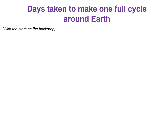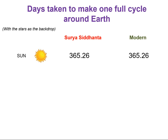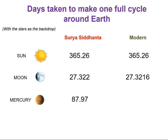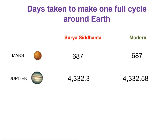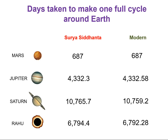From figures listed in the Surya Siddhanta, we can draw the following comparison of days taken for each planet to make one full cycle around the Earth. The sun: 365.26 days in the Surya Siddhanta — the modern figure is exactly the same. The moon: 27.332 days — very similar to modern. Mercury: 87.97 in the Surya Siddhanta versus 87.969 modern. Venus: 224.7 days for both — exactly the same. Mars: 687 days for both. Jupiter: 4,332.3 in the Surya Siddhanta, very similar to modern. Saturn: over 10,000 days — also very similar. And Rahu shows very similar figures as well; we'll return to Rahu later.